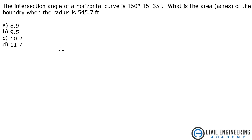The problem states the intersection angle of a horizontal curve is 150 degrees, 15 minutes, 35 seconds. What is the area in acres of the boundary when the radius is 545.7 feet?